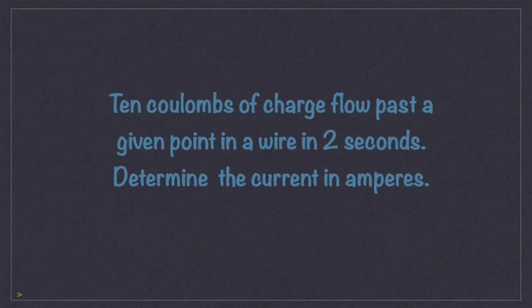Ten coulombs of charge flow past a given point in a wire in 2 seconds. Determine the current in amperes. Answer: 5 amperes.